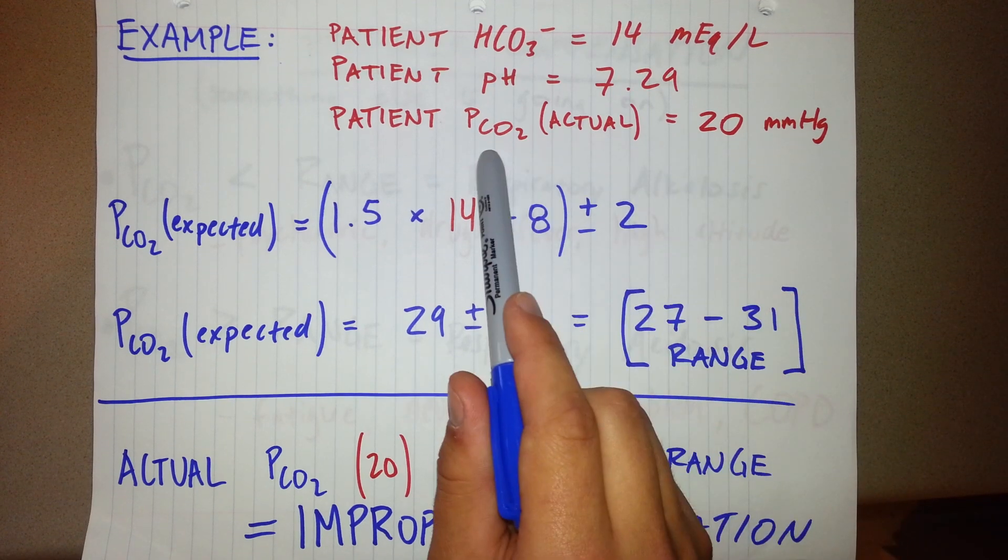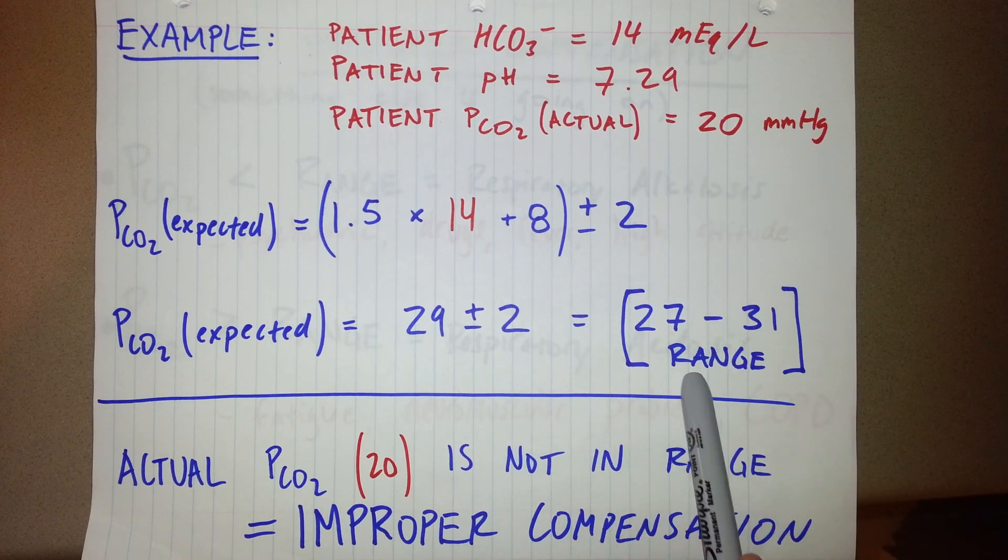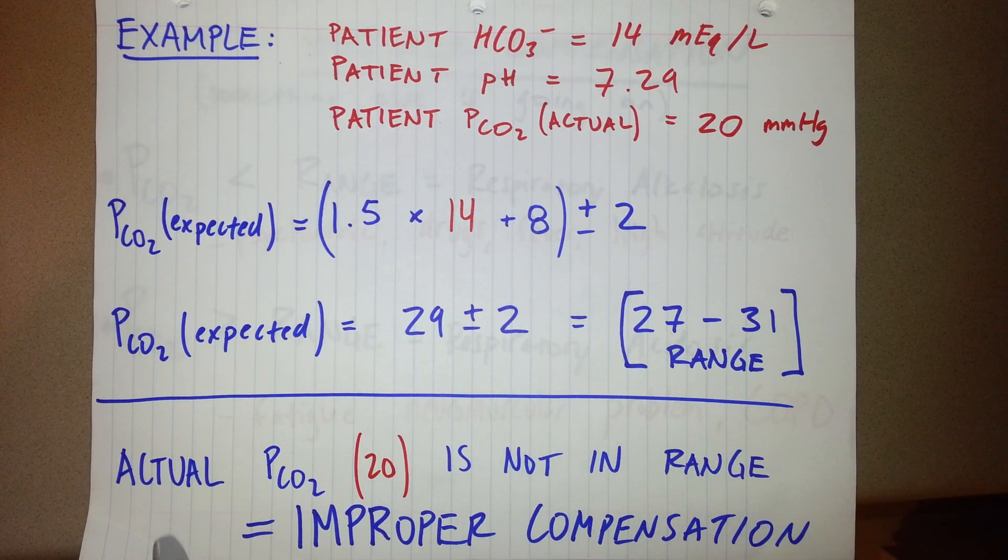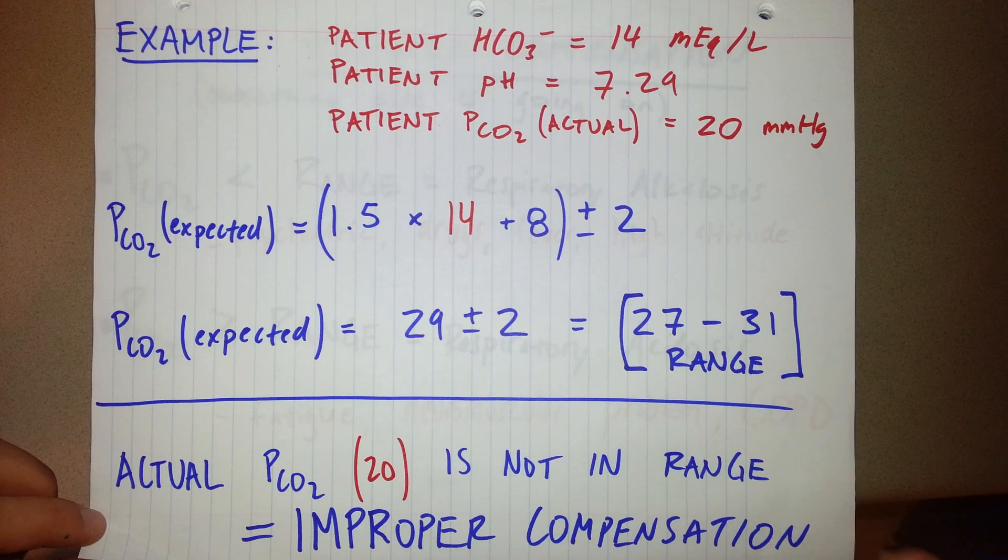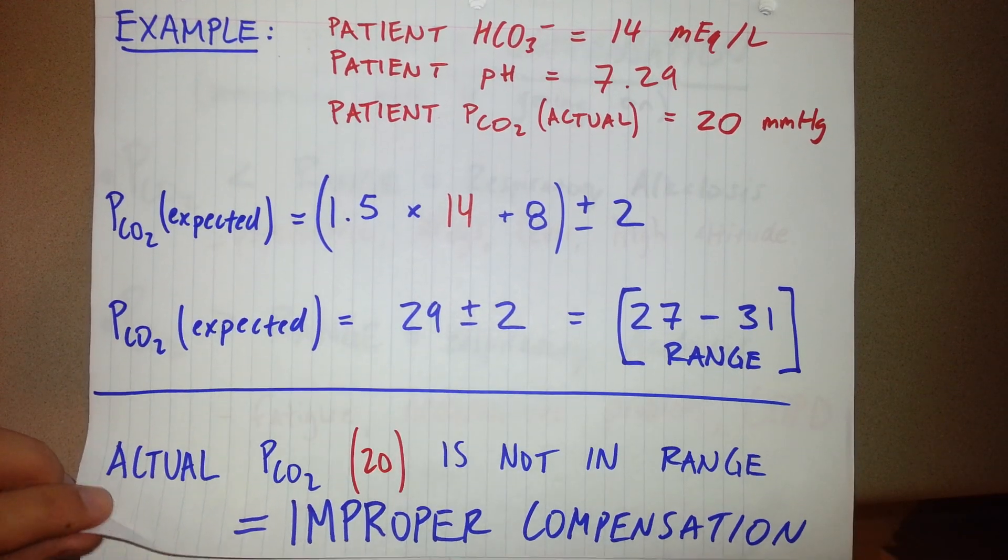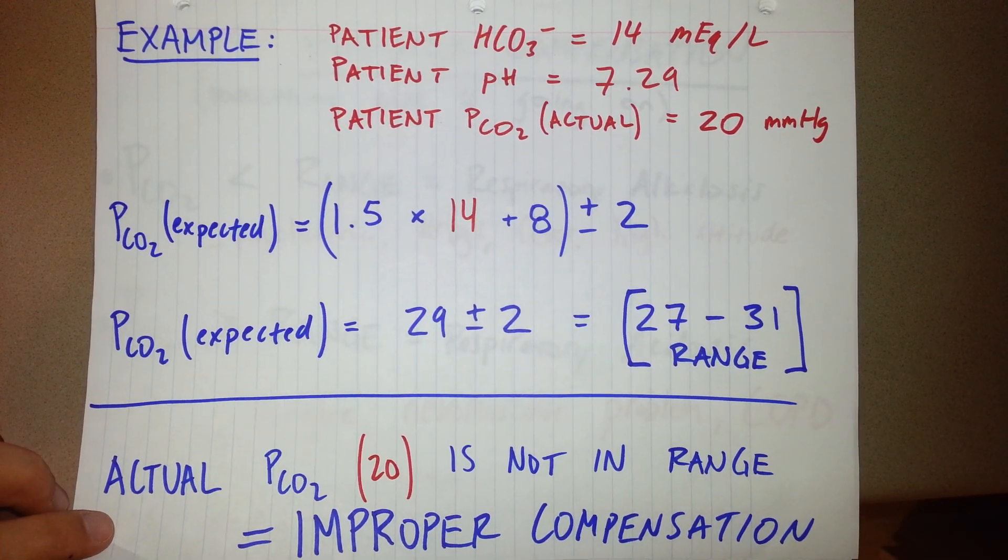Now you can clearly see that our actual CO2 is not within that range. Down here I summarized that the actual PCO2 of 20 is not in the range, which means that there's improper compensation or the respiratory system is not properly compensating for the ongoing metabolic acidosis caused by that diarrhea.